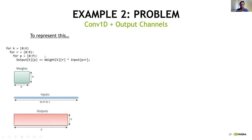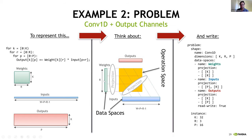Moving to a more complex problem: still 1D convolution but with added output channels — the K dimension. The filter gains a K dimension, and the output activations gain a K dimension, while input activations remain unchanged. In the loop nest, the K loop appears on weights and outputs but not on inputs. To represent this, you extend the dimensions to include K, add K to the weight and output projections, leave the input projection unchanged, and instantiate K in the problem instance.